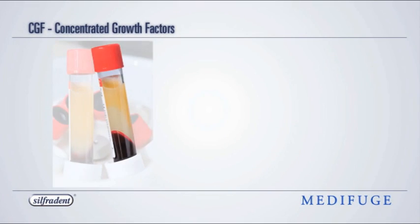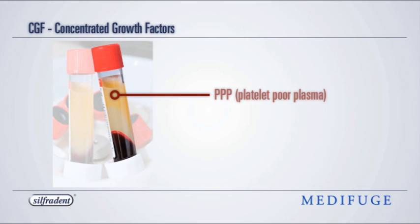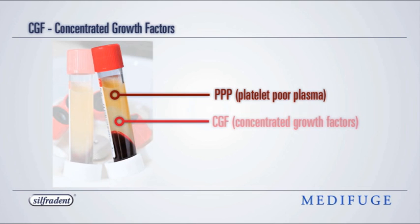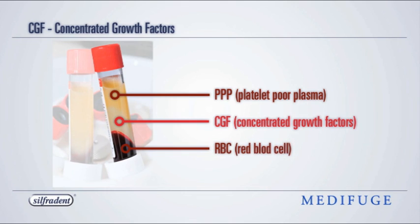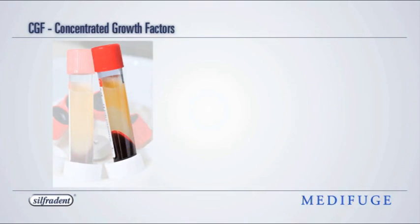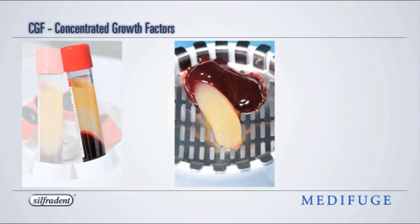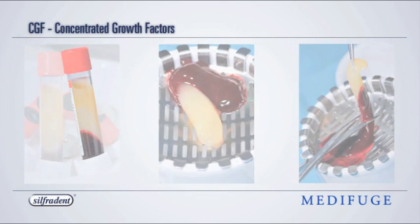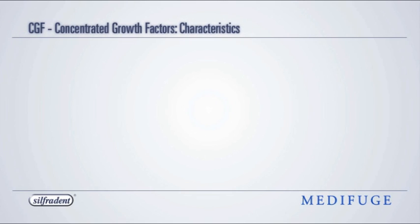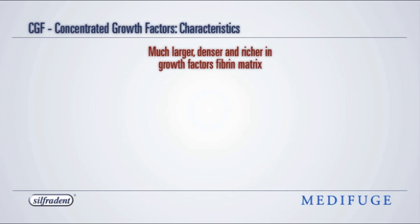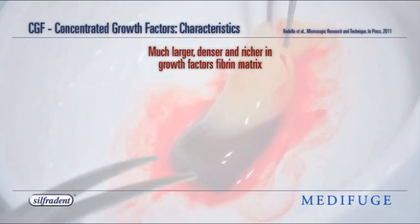At the end of the process, there are three blood fractions: the upper platelet-poor plasma layer, the middle fibrin-rich gel with aggregated platelets and concentrated growth factors, and the lower red blood cell layer. The variable centrifugation speed permits the isolation of a much larger, denser, and growth-factor-richer fibrin matrix.